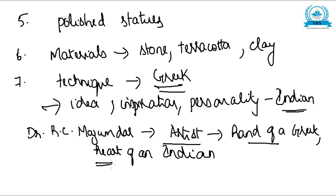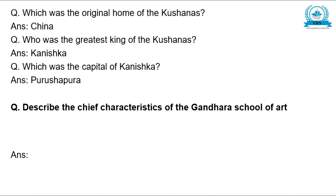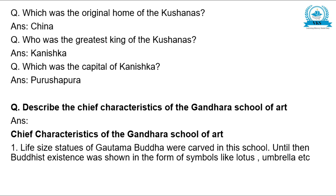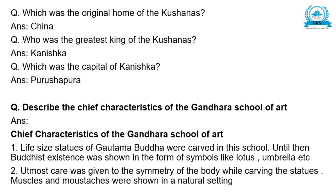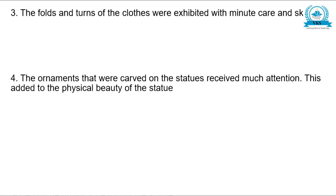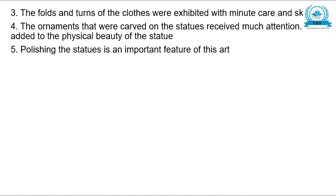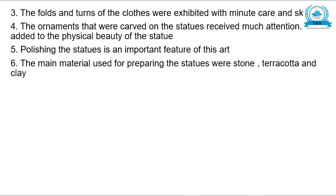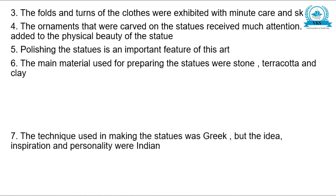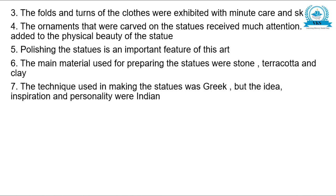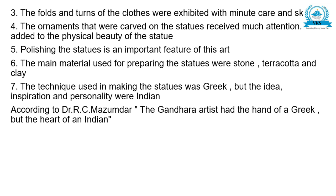Let us review the important characteristics of the Gandhara school of art once more: life-size statues of Gautama Buddha were carved — until then Buddhist existence was shown in symbols like lotus and umbrella; utmost care was given to the symmetry of the body, with muscles and moustaches shown in a natural setting; folds and turns of clothes were exhibited with minute care and skill; ornaments carved on the statues received much attention, adding to physical beauty; polishing the statue is an important feature; main materials used were stone, terracotta, and clay; the technique was Greek but the idea, inspiration, and personality were Indian. According to Dr. R.C. Majumdar, the Gandhara artist had the hand of a Greek but the heart of an Indian.